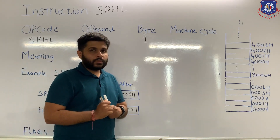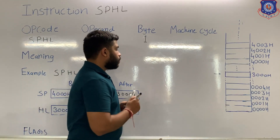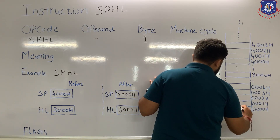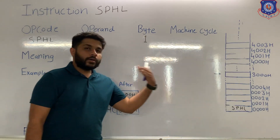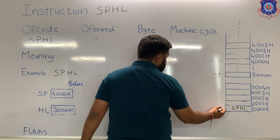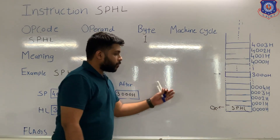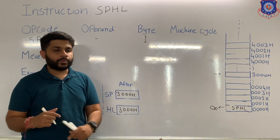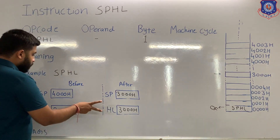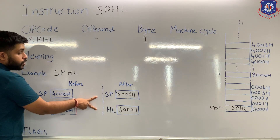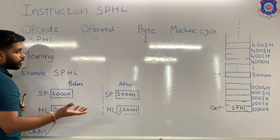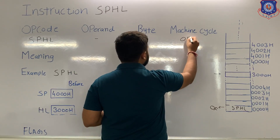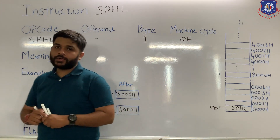Since this instruction is of only one byte, when stored in memory it will occupy only one memory location. The processor will read the instruction using the first machine cycle, which is opcode fetch. When the microprocessor performs the opcode fetch, the instruction is transferred, decoded, and executed. The data transfer happens between two register pairs that are part of the microprocessor. So only one machine cycle is needed — opcode fetch — and no flags are affected for this instruction.